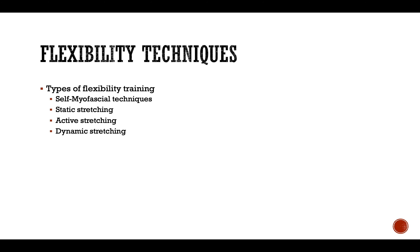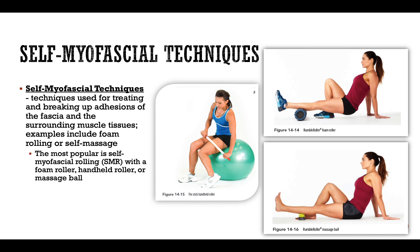There are different types of flexibility techniques: self-myofascial release — commonly known as foam rolling — static stretching, active stretching, and dynamic stretching. These are all part of NASM's process for achieving proper flexibility. Self-myofascial release involves breaking up adhesions of the fascia surrounding the muscle tissue. Foam rollers can be smooth or have knobs on them.